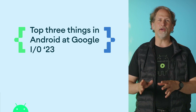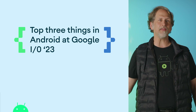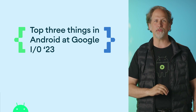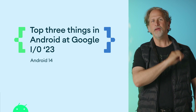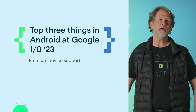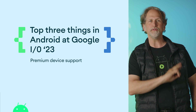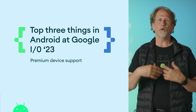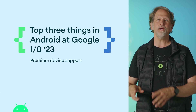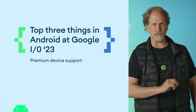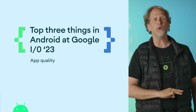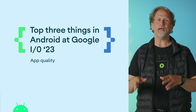Continuing our I/O coverage, we released a short video and blog detailing the top three things to know from Android platform and quality at Google I/O 2023. These include Android 14 with new privacy, security, and system UI-related features; enhanced support for premium devices including Ultra HDR images, more premium camera extensions, new production-ready models in ML Kit, and the public beta of the acceleration service for custom ML models; and app quality, including a new quality framework, quality hub, and design hub.